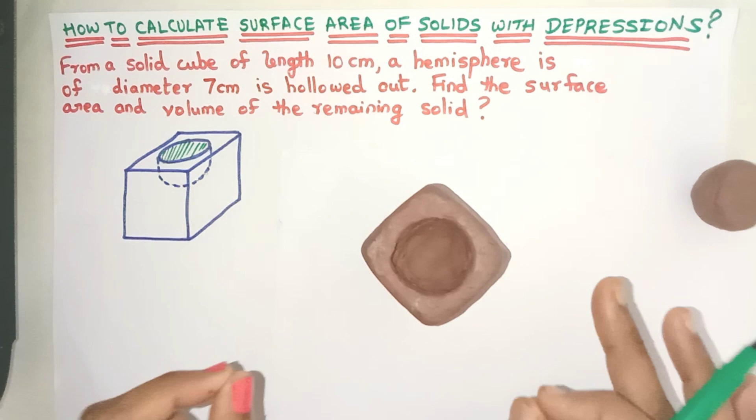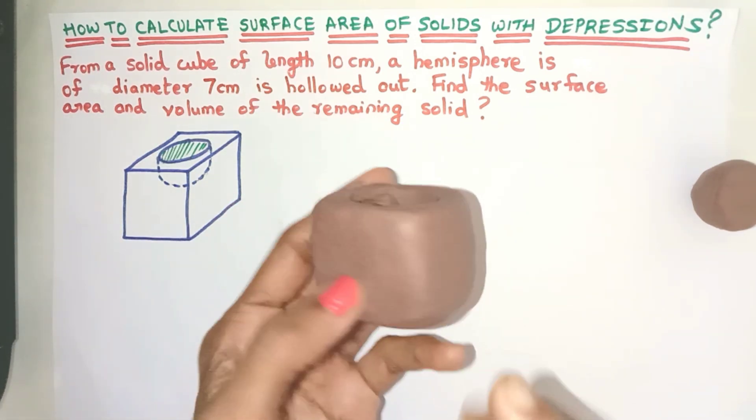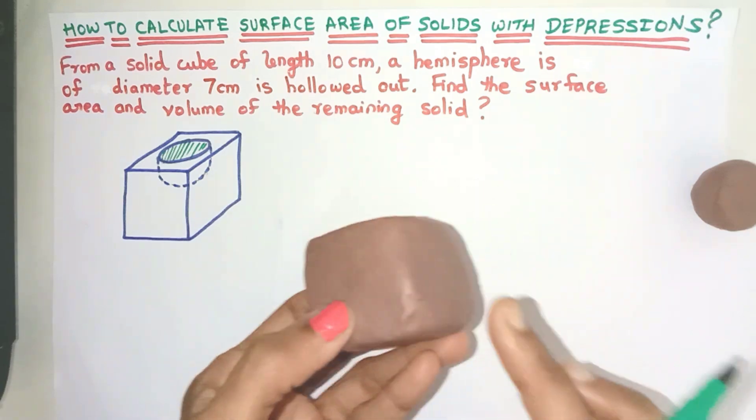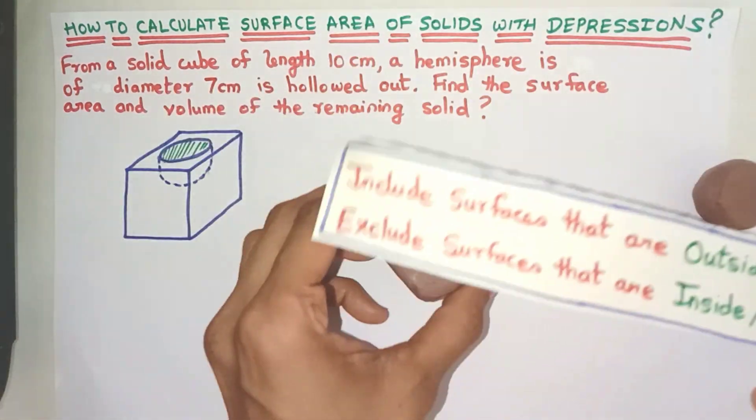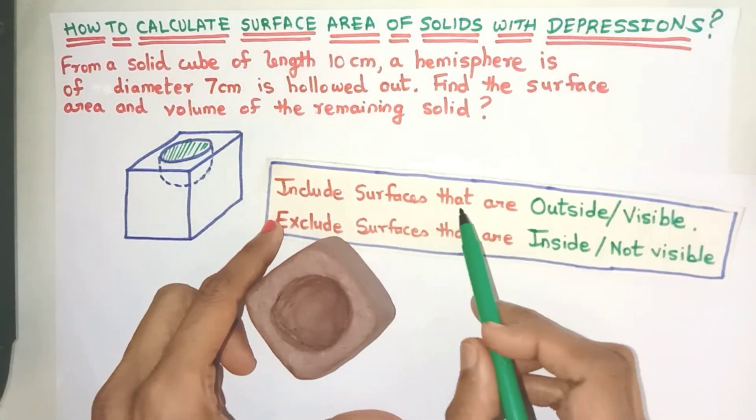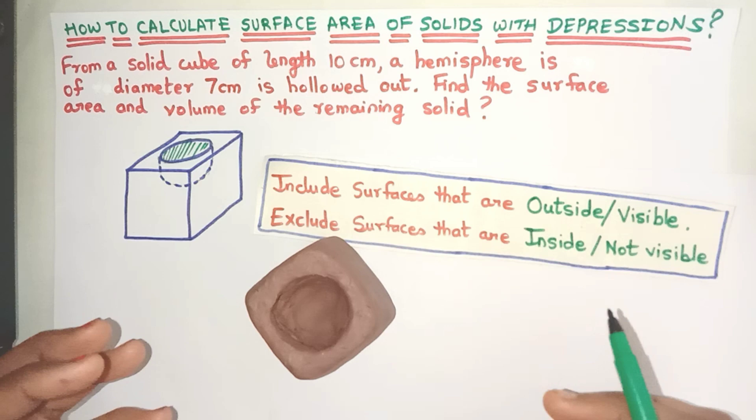Let's first find the surface area of this solid. To find the surface area, first let's consider which surfaces we have to include. If you recall in a previous video, we mentioned that the main guideline is to include surfaces that are outside or visible and to exclude surfaces which are inside or not visible.